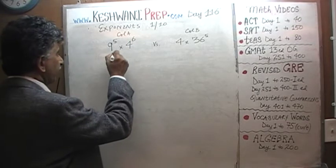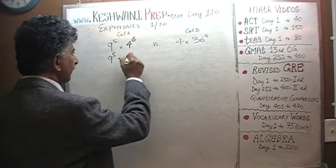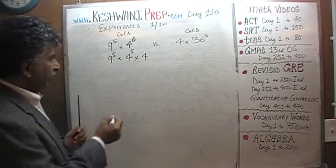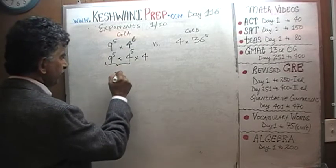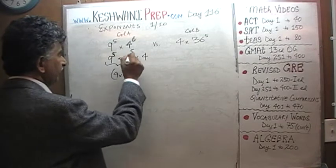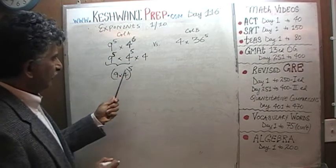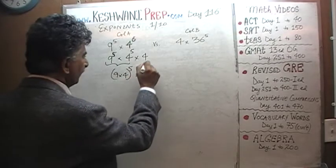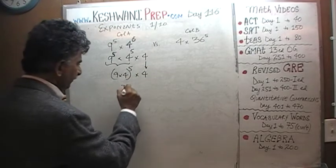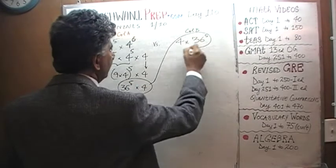9 raised to 5 times 4 raised to 6. 4 raised to 6 can be written as 4 raised to 5 times 4. And now we can combine these two which is same as 9 times 4 raised to 5. This 4 just comes down. And 9 times 4 is just 36. So it's 36 raised to 5 times 4 which is the exact same quantity as we see here.